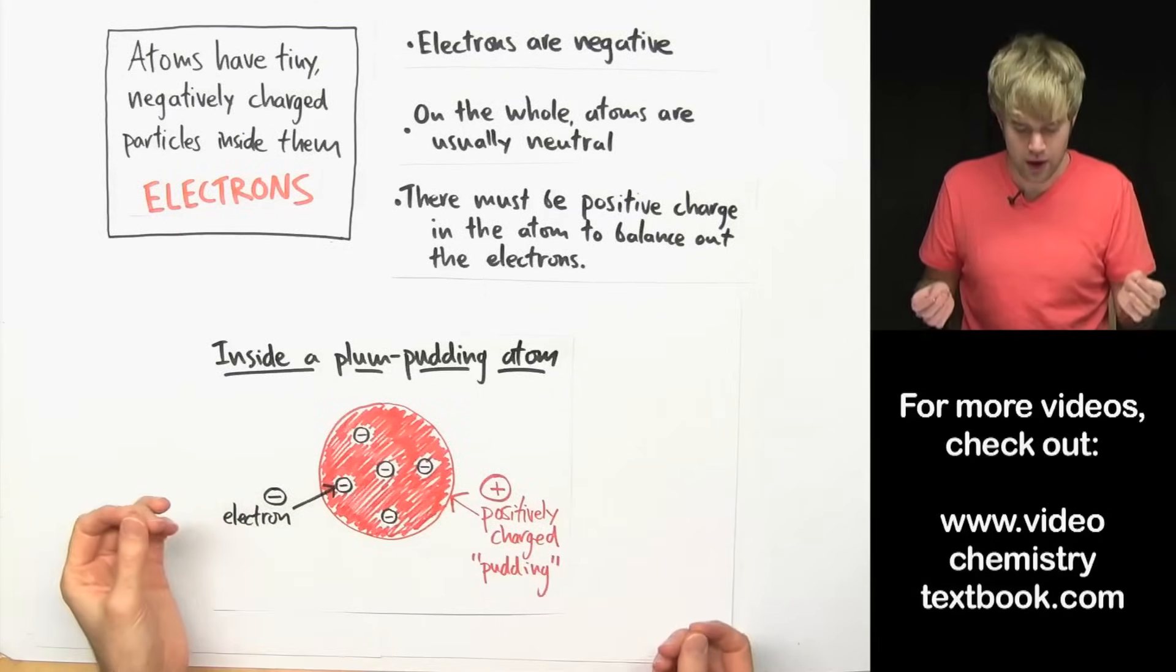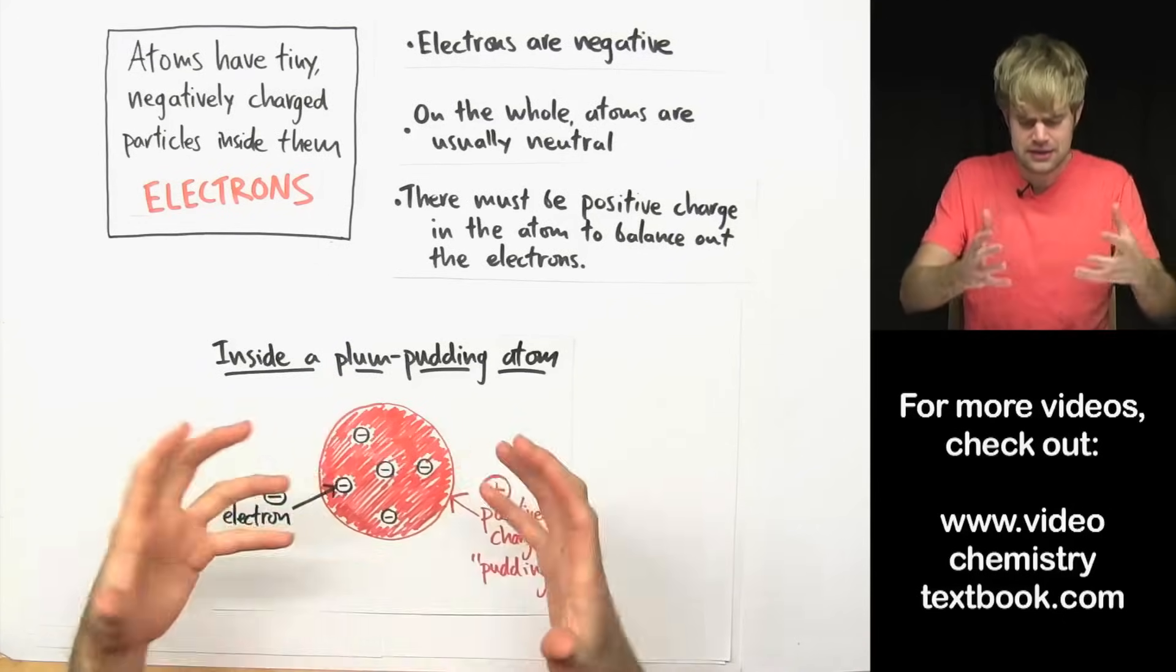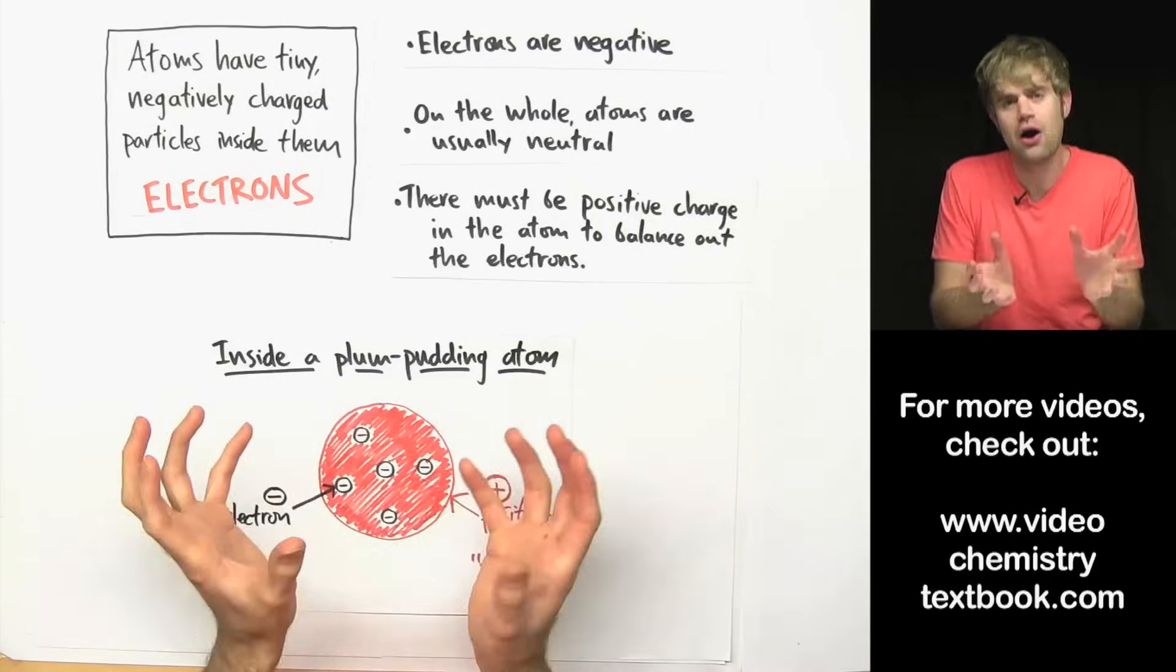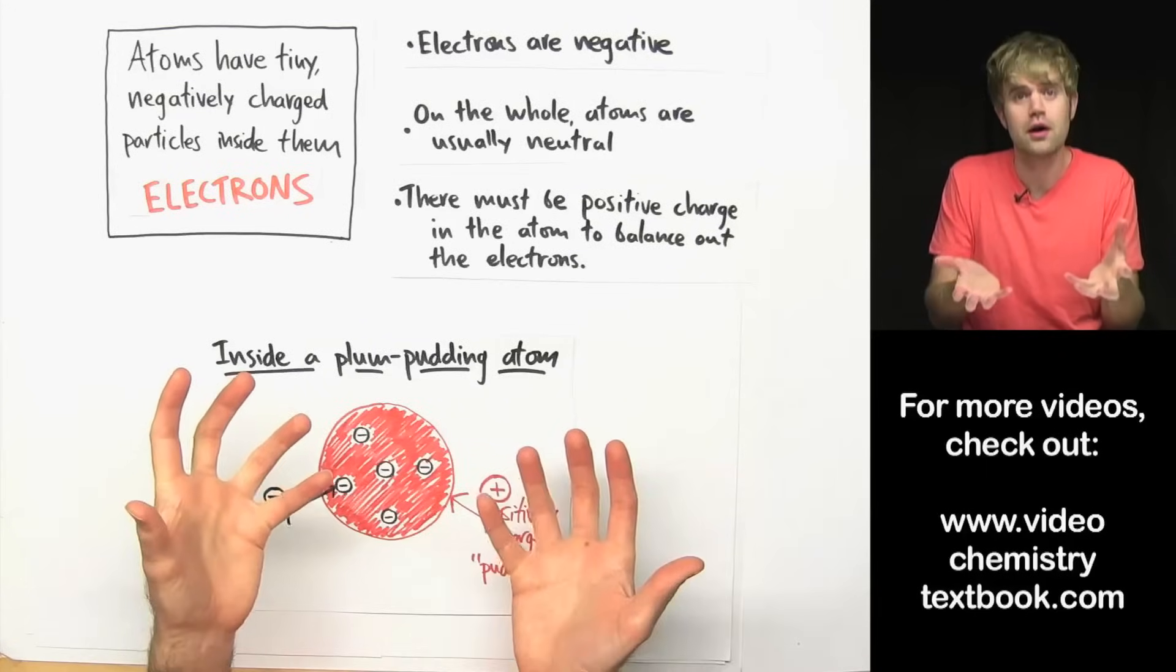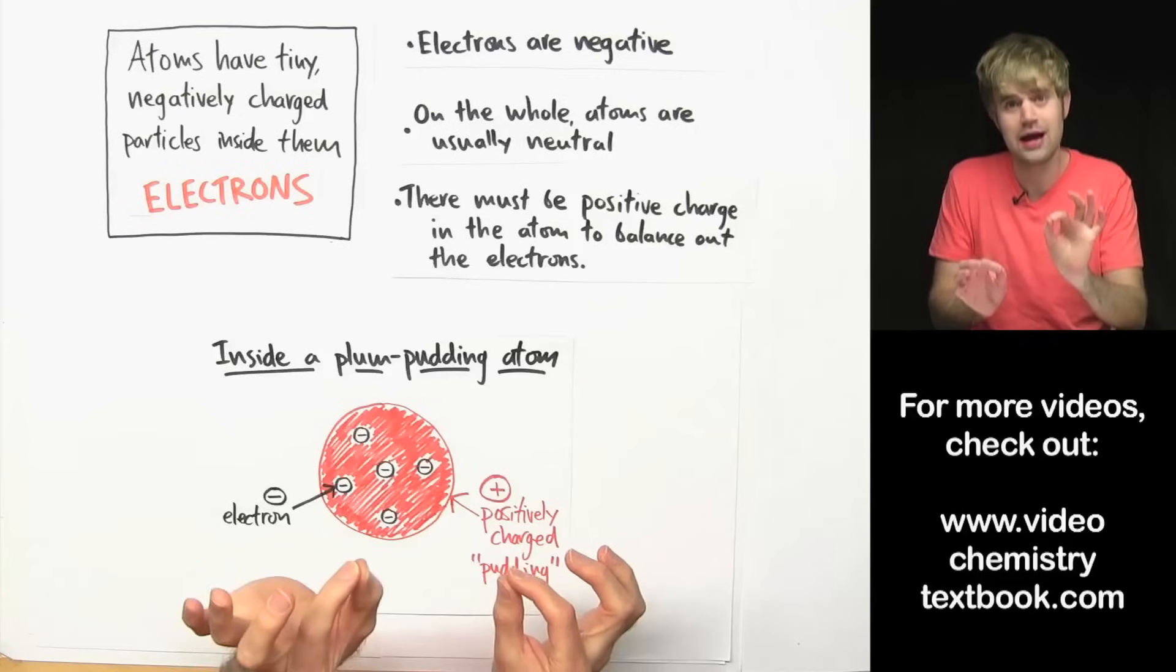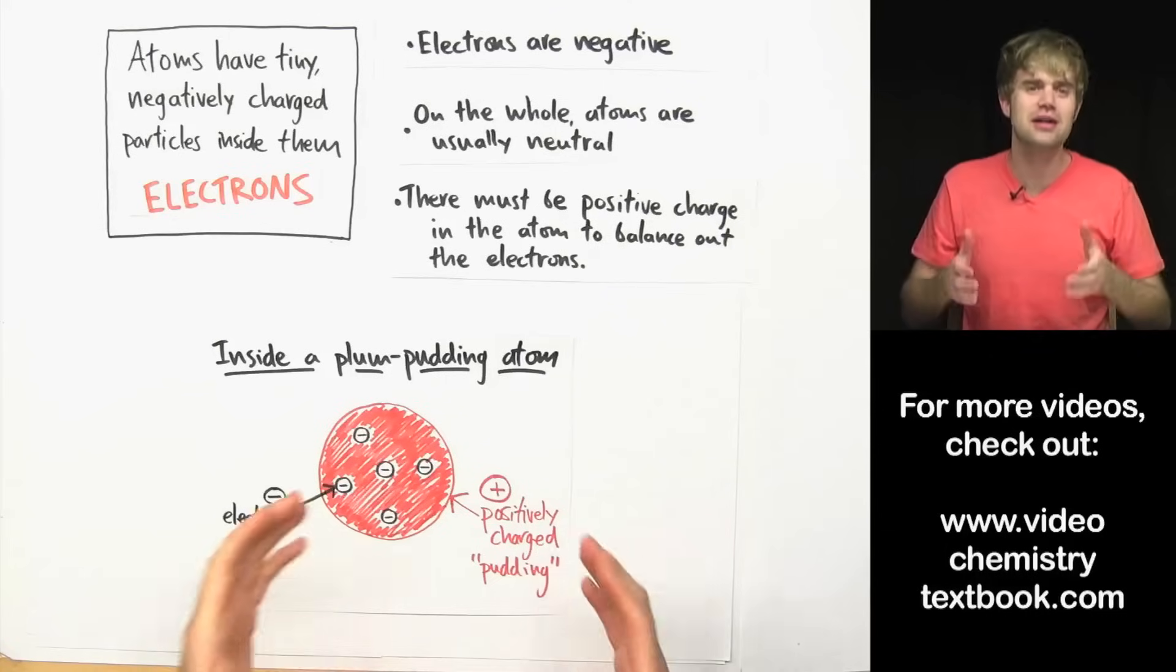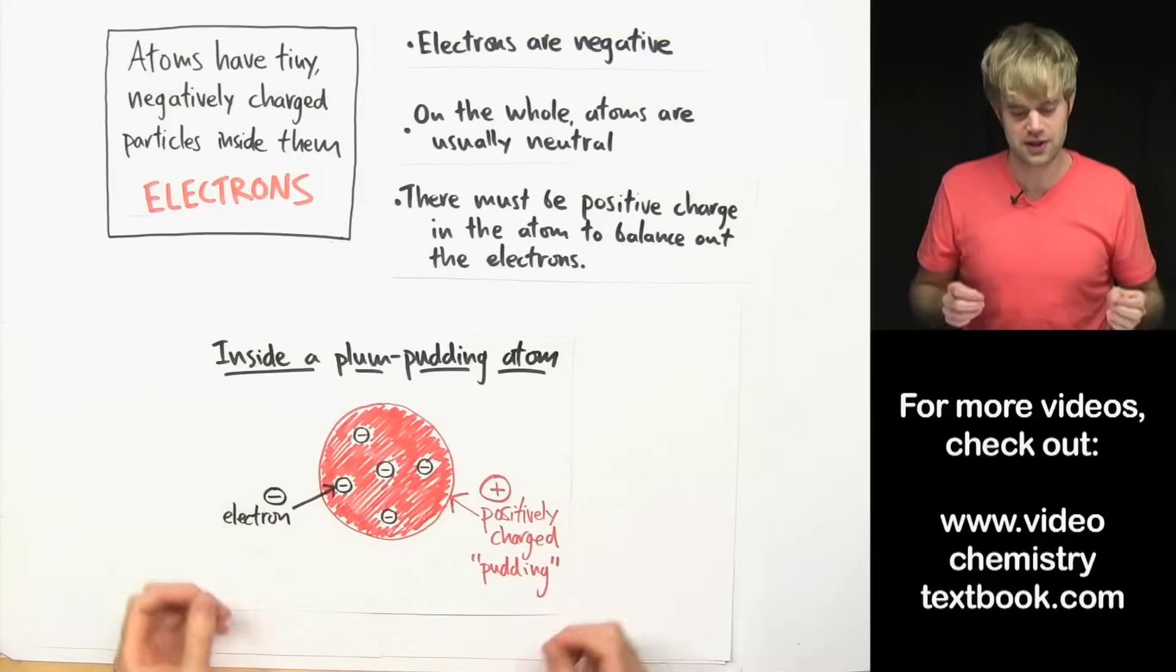But now JJ Thompson didn't have it quite right because it turns out that the positive charge in the atom isn't sort of spread out in this dough or pudding but instead it's concentrated right in the center of the atom where the nucleus is. So that's going to be the next step in discovering what the atom really looks like.